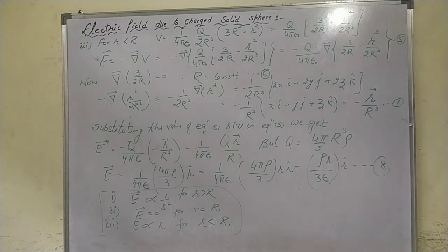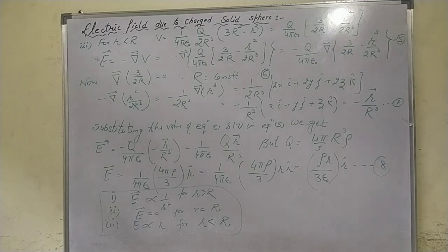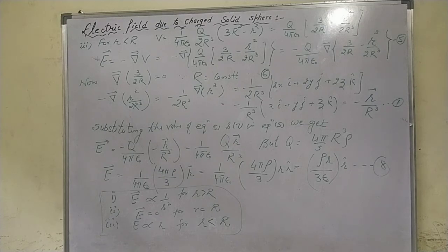From the previous lecture, the total charge q equals (4π/3) × R³ × ρ, where ρ is the volume charge density. Substituting this into the equation, E = 1/(4πε₀) × (4πρ/3) × r². After cancelling R³, we get E = 1/(4πε₀) × (4πρ/3) × r × r̂.